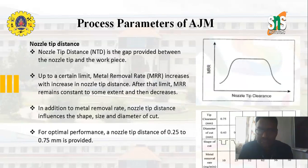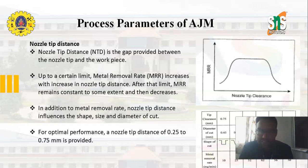The next important parameter is nozzle tip distance, which is the gap provided between the nozzle tip and the workpiece. Up to a certain limit, metal removal rate increases with increase in nozzle tip distance. After that limit, MRR remains constant to some extent and then decreases. In addition to MRR, nozzle tip distance influences the shape, size, and diameter of the cut. For optimal performance, a nozzle tip distance of 0.25 to 0.75 mm is provided.